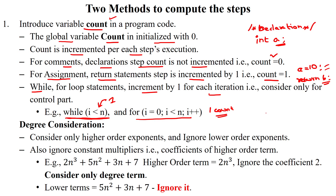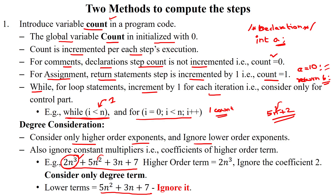Whenever we get the number of steps in the written program — for example, 5n plus 2 — we have to consider the degree of the term n. Here we will consider only the higher order exponents and ignore the lower order exponents. For example, given a step count like n³ + 5n² + 3n + 7, we consider only n³ since degree 3 is higher than degree 2 and 1. These lower order terms are ignored as per the procedure.